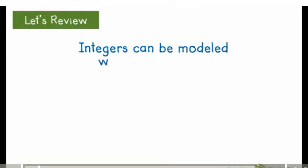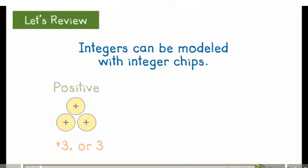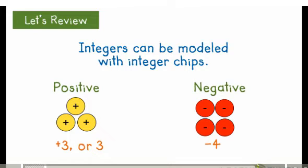Let's review. Integers can be modeled with chips. Yellow chips represent positive numbers, and red chips represent negative numbers.